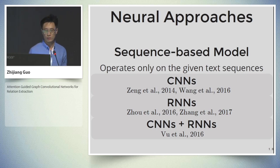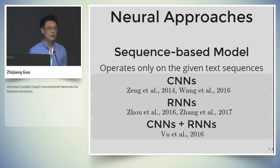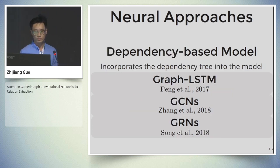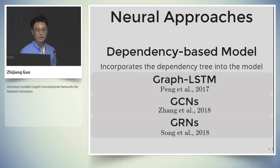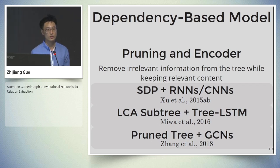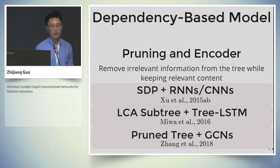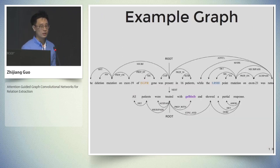Current neural approaches can be roughly categorized into two types: sequence-based models and dependency-based models. For sequence-based models, they operate directly on the given text sequence, and different neural networks including CNN or RNN are used to get the representation of the corresponding entities for later classification. For dependency-based models, they incorporate the dependency tree directly into the model, and different structural encoders including graph LSTM, GCN, and GIN are used to get the representation of the dependency tree. In order to further improve performance, various pruning strategies are proposed to remove irrelevant information from the tree while keeping relevant content.